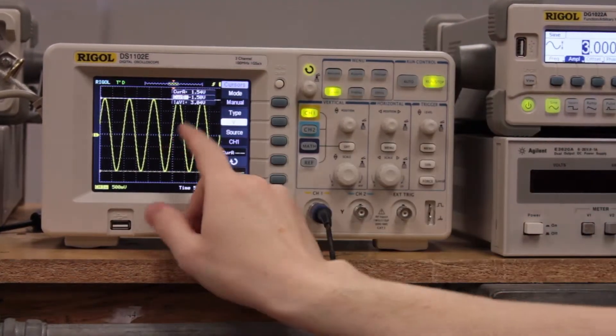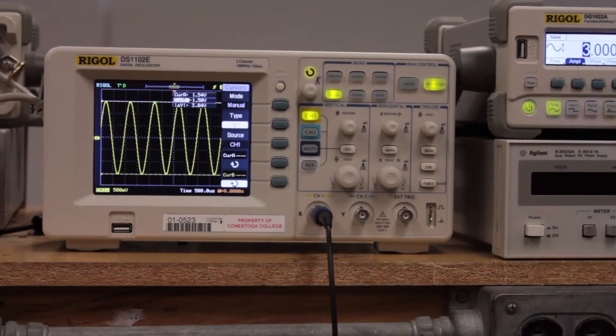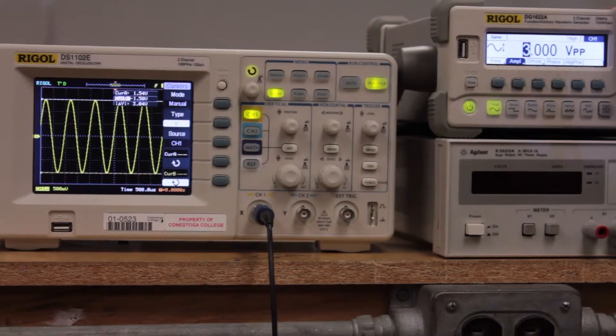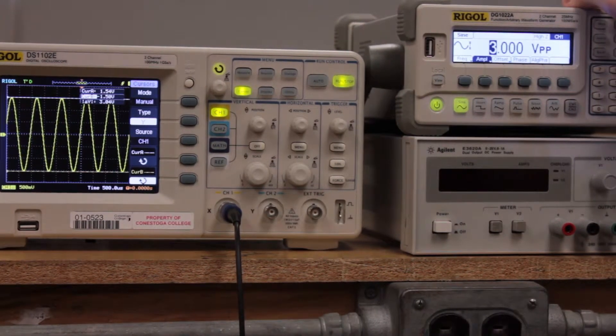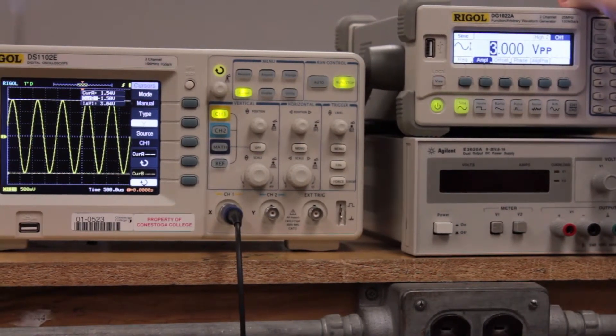So it looks like we've got a peak to peak of about 3.04 volts. And that's pretty accurate considering that we're firing in 3.0 volts peak to peak here from the signal generator and a little bit of variation is okay. This isn't a perfect system.